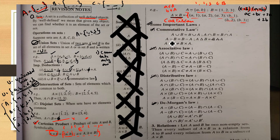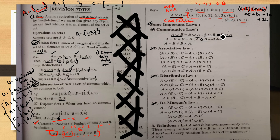Commutative property: A union B equals B union A. This is commutative. Similarly, A intersection B equals B intersection A. For subtraction: A minus B is NOT equal to B minus A. And the delta operator: A delta B equals B delta A. But A cross B is NOT equal to B cross A — this is very important.